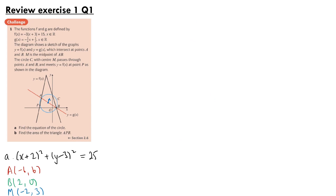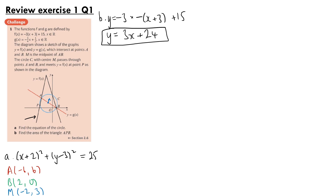For part b, we need to find the area of triangle APB. We need the intersection of the left branch of the modulus graph and the circle. The equation of that branch is y equals minus 3 times (minus x plus 3) plus 15, which expands to 3x plus 24. Substituting into the circle equation: (x plus 2) squared plus (3x plus 24 minus 3) squared, so (3x plus 21) squared, equals 25.